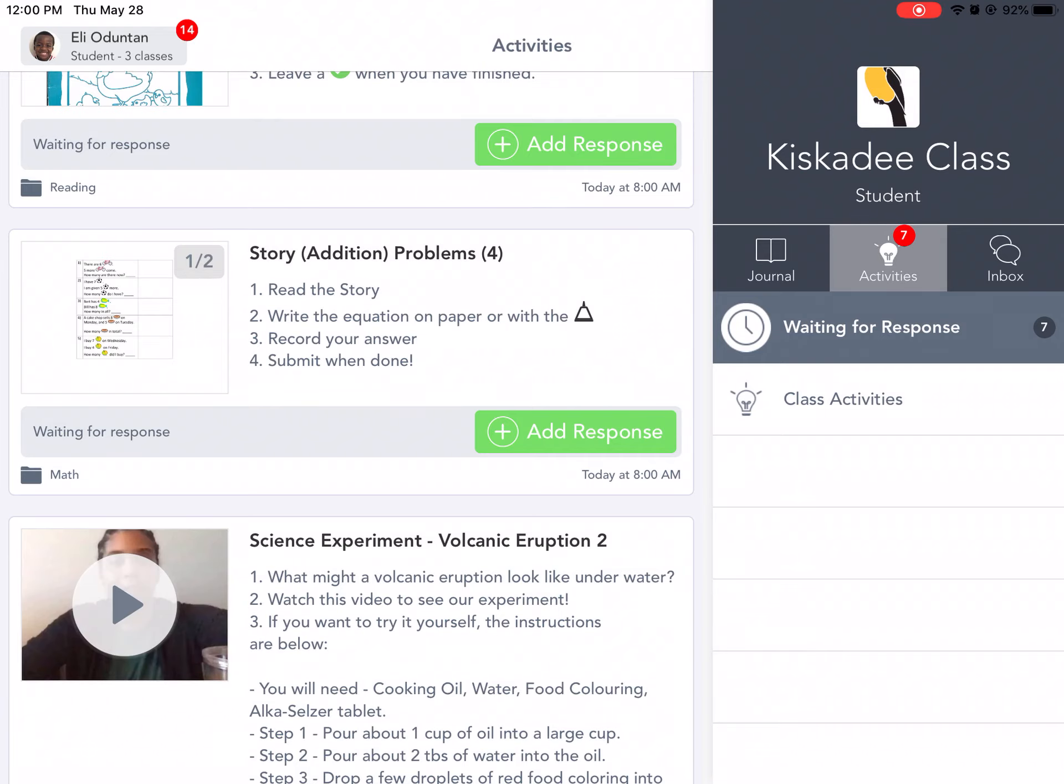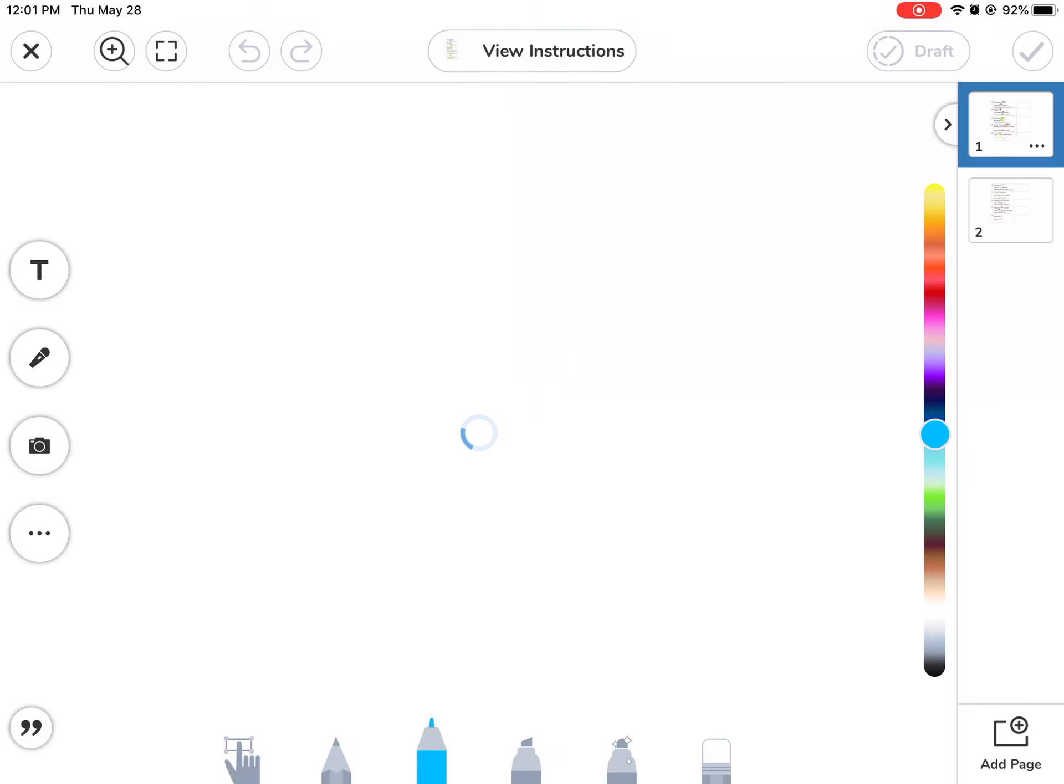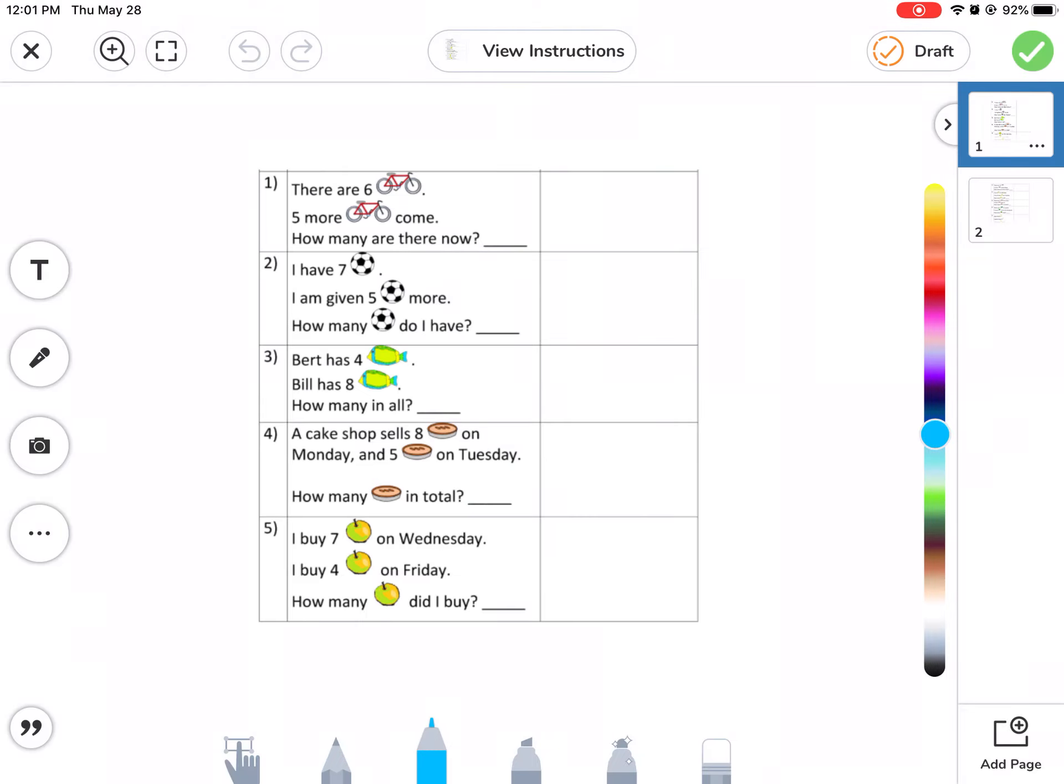Can you keep it down please? Thank you. Okay Eli, let's do this additional problem. So here, if you can write your equation here and write the answer here. Okay, can you do that? Please read it first before you start. There are six bicycles, five more come. How many are there now?